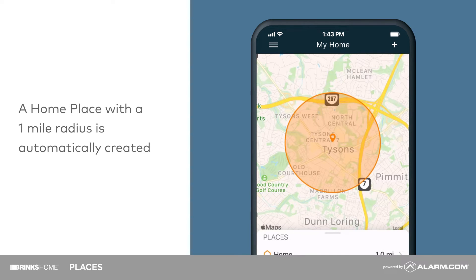A home place with a 1 mile radius is automatically created based on your system address. This place can be modified but not deleted.